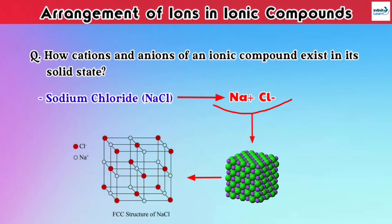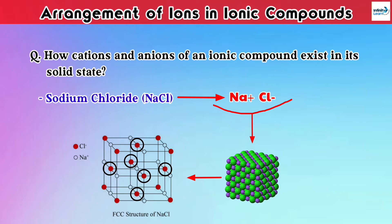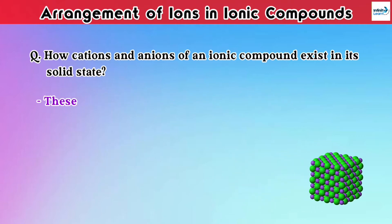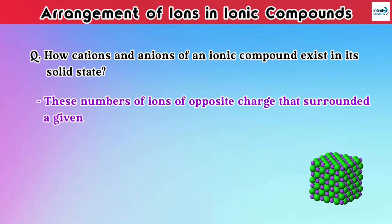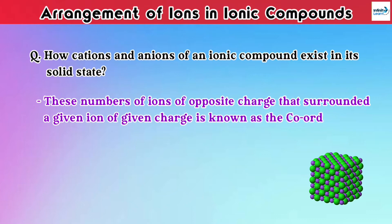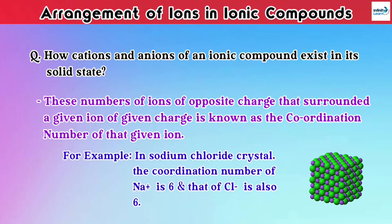Now, in this case, each Na+ ion is surrounded by 6 Cl- ions, and each Cl- ion is surrounded by 6 Na+ ions, and this chain will go on. The number of ions of opposite charge that surround a given ion is known as the coordination number of that given ion. For example, in sodium chloride crystal, the coordination number of Na+ is 6, and that of Cl- is also 6.